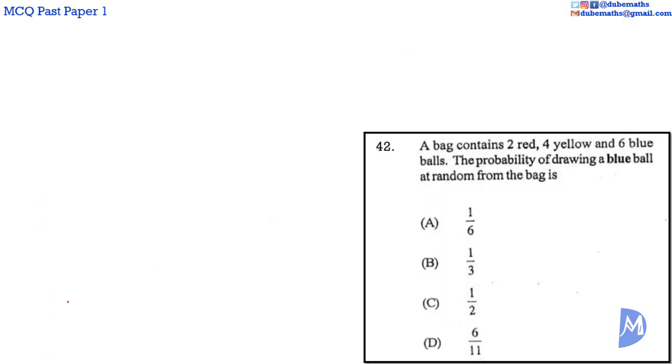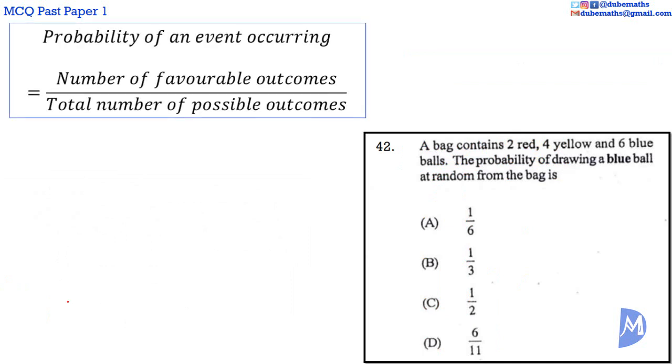Question 42. The probability of an event occurring is equal to the number of favourable outcomes over the total number of possible outcomes. We are going to draw a ball at random from the bag. A favourable outcome is if that ball that we draw is a blue ball.